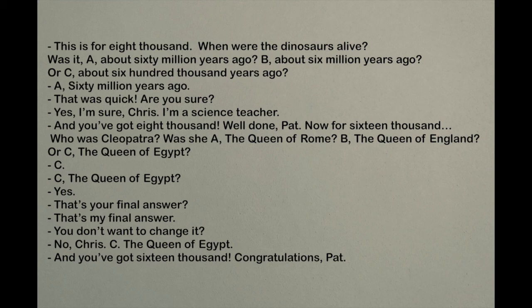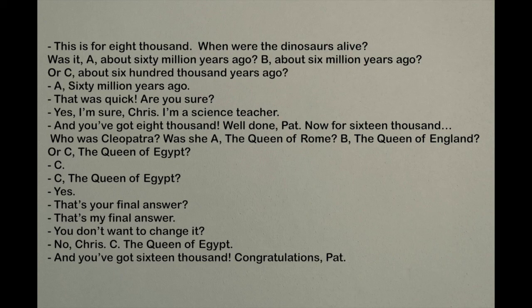This is for 8,000. When were dinosaurs alive? Was it A, about 60 million years ago, B, about 6 million years ago, or C, about 600,000 years ago? A, 60 million years ago. That was quick. Are you sure? Yes, I'm sure, Chris. I'm a science teacher. And you've got 8,000! Well done, Pat! Now for 16,000. Who was Cleopatra? Was she A, the Queen of Rome, B, the Queen of England, or C, the Queen of Egypt? C, the Queen of Egypt. Yes. That's my final answer. You don't want to change it? No, Chris. C, the Queen of Egypt. And you've got 16,000! Congratulations, Pat!